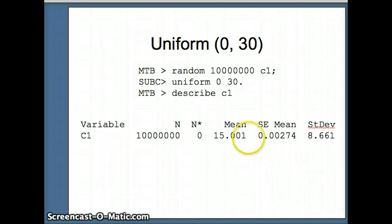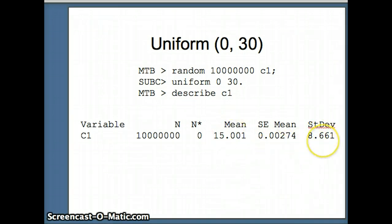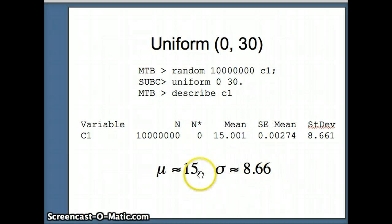We get a mean of 15.001 from our 10 million numbers — we expected the mean to be 15, so we feel good about that. The standard deviation is 8.661. These are statistics, not parameters, but with n=10 million they are close representatives of the parameters. So we'll claim the mean of uniform(0,30) is about 15 and the standard deviation is about 8.66.